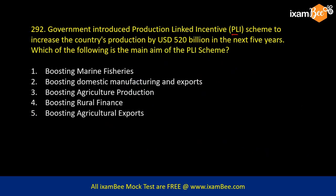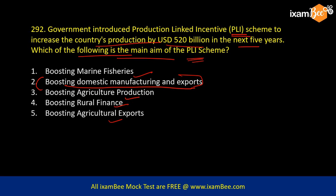The government introduced the Production Linked Incentive (PLI) scheme to increase the country's production by USD 520 billion in the next 5 years. What is the main aim of the PLI scheme? Using option elimination, it would not be focused only on fisheries, agriculture, rural finance, or agricultural exports. The clear winner is boosting domestic manufacturing and exports — even without having read about the PLI scheme specifically, this is the most logical answer given the stated goal of increasing production by 520 billion.